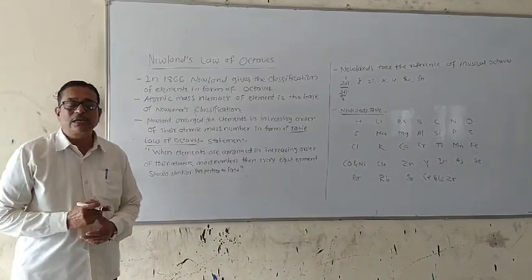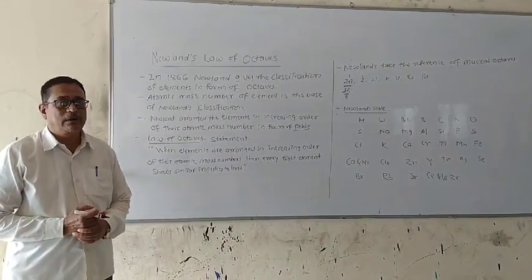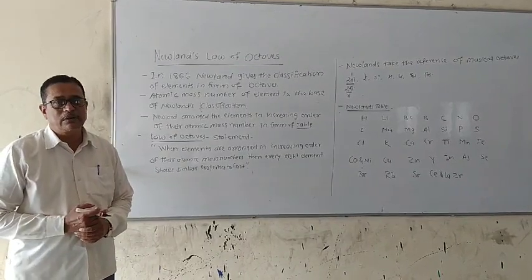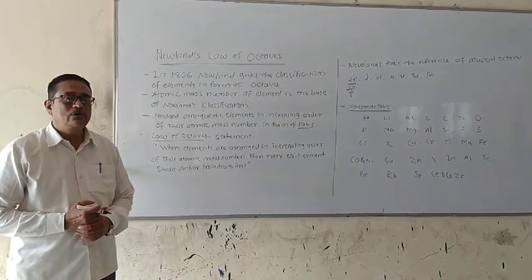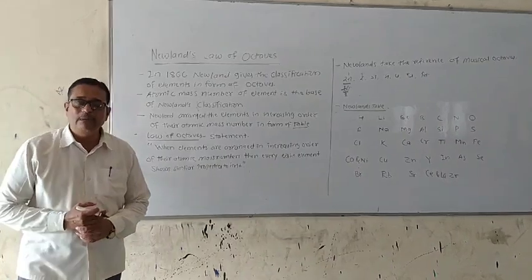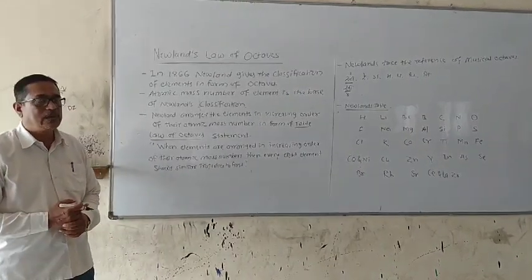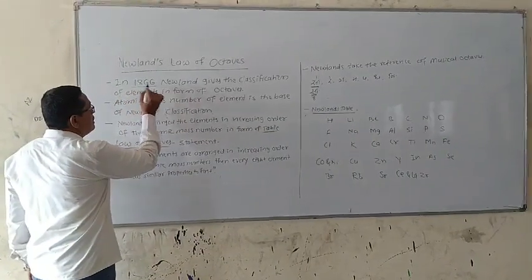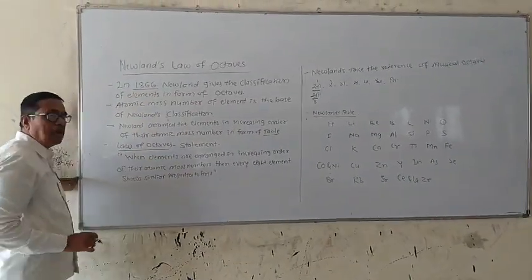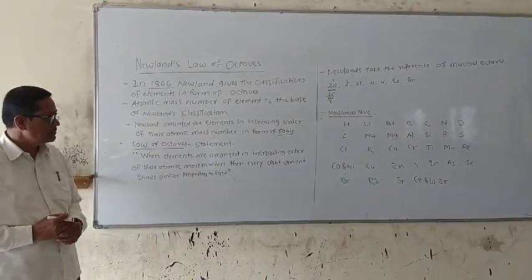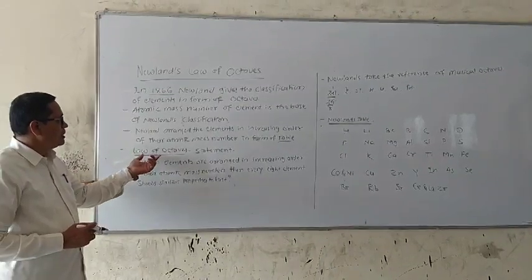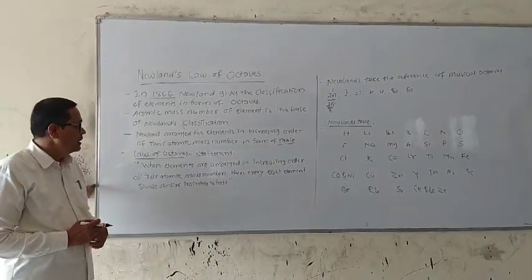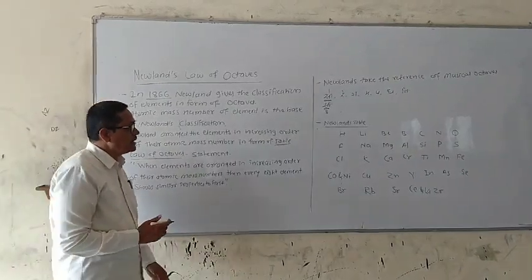Newland was the first scientist who arranged the elements in the form of a table in increasing order of their atomic mass number, because according to Newlands, the properties of elements are dependent upon atomic mass number. Newland used this classification of elements in 1866, arranging the elements in increasing order of their atomic mass number.